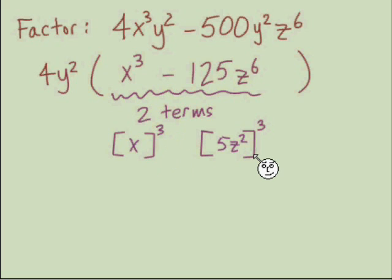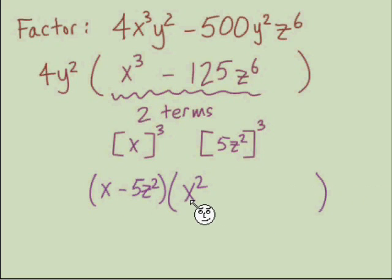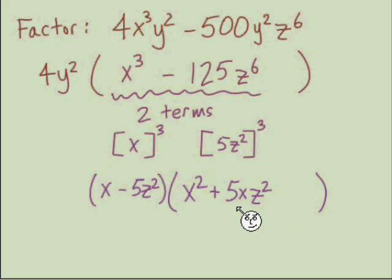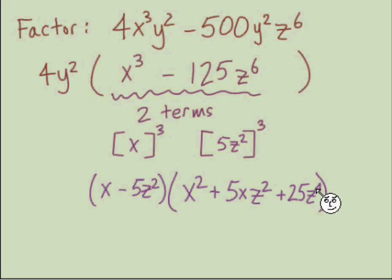Once we have our boxes filled in, we consult the difference of cubes pattern because of the subtraction. The first factor uses exactly what's in the boxes — x and 5z² — with a minus. The second set of parentheses starts with x squared, plus the middle term x times 5z² giving us 5xz², plus 5z² squared, which gives us 25z⁴.